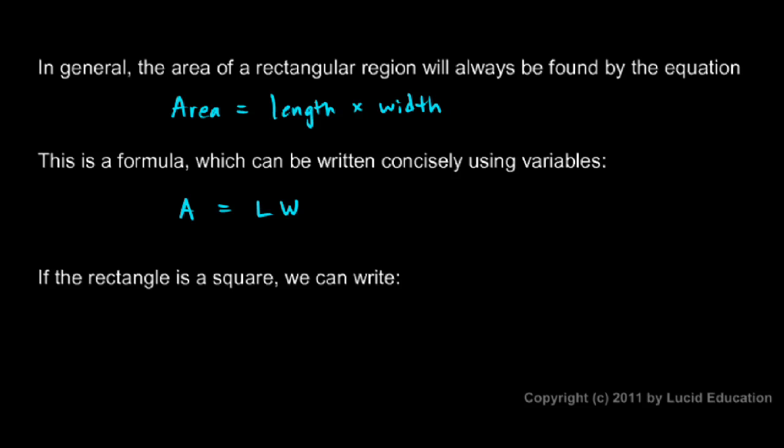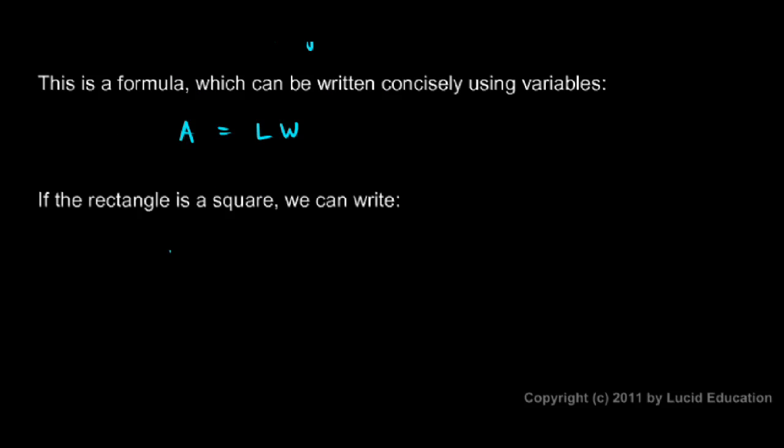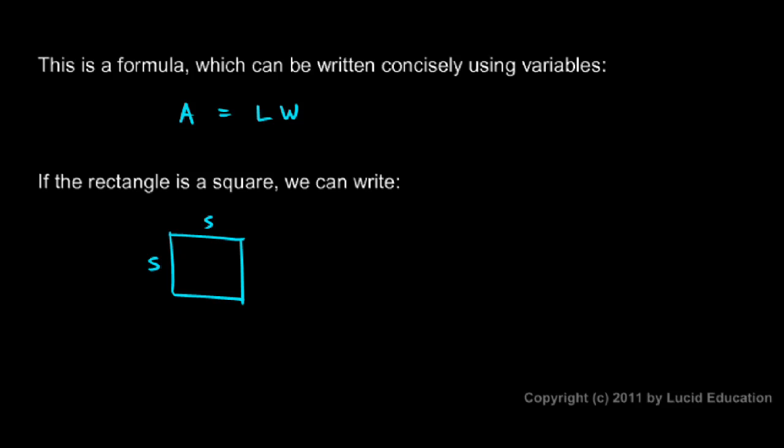And if the rectangle that we're looking at happens to be a square, a square has the same length as it does width. So the length of a side we'll just call S. So both sides would be S. Its length or width S and length S. So the area for a square just ends up being S times S. Think S for side, the length of one side. So you could write this as area is equal to S squared. The area of a rectangle is length times the width. And the area of a square is the length of a side squared.